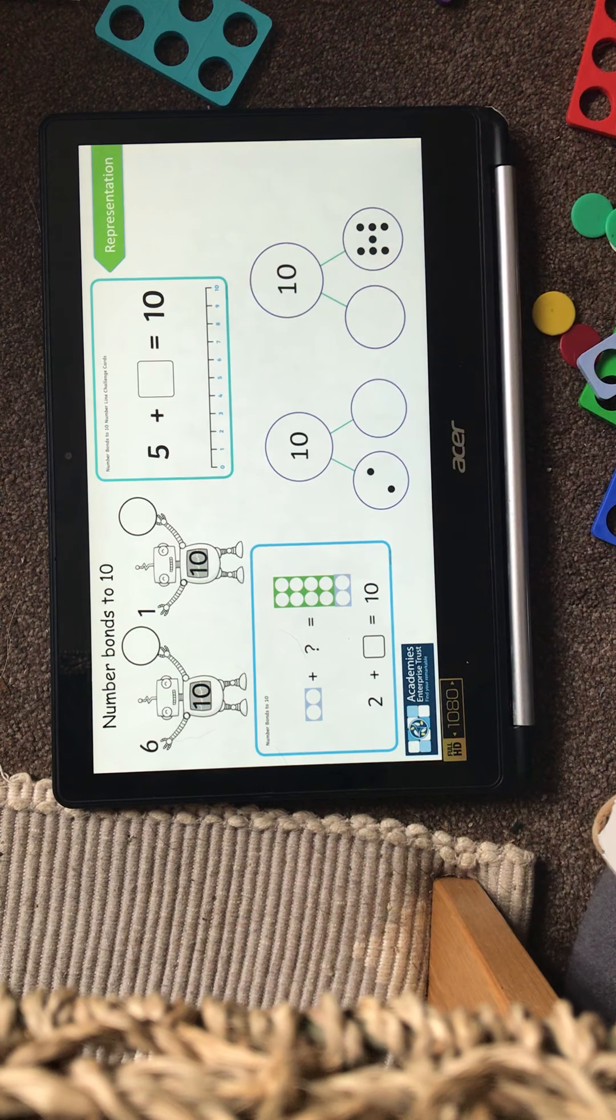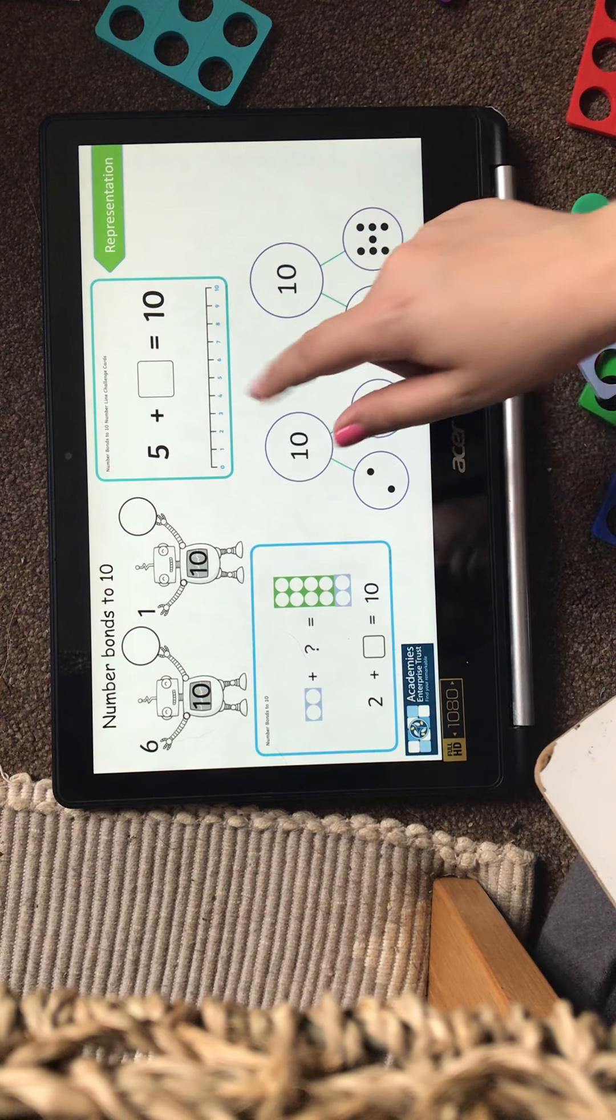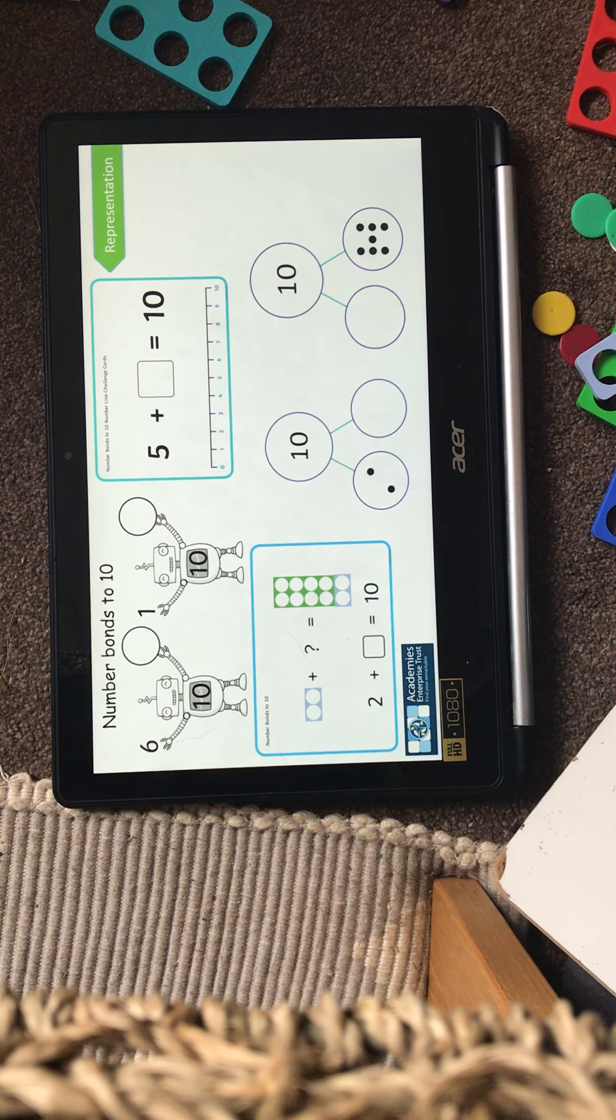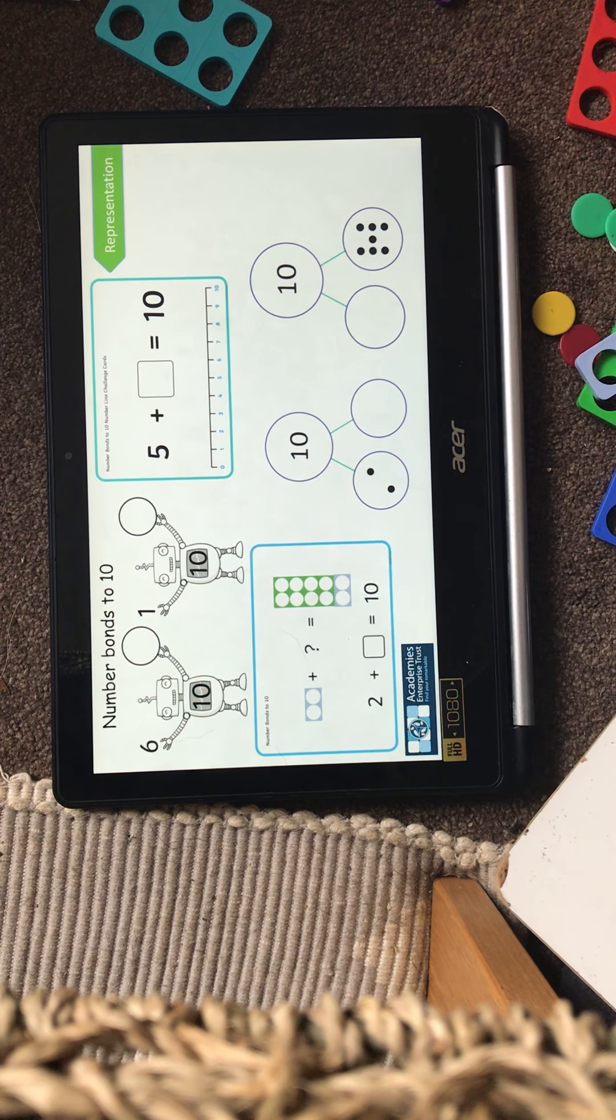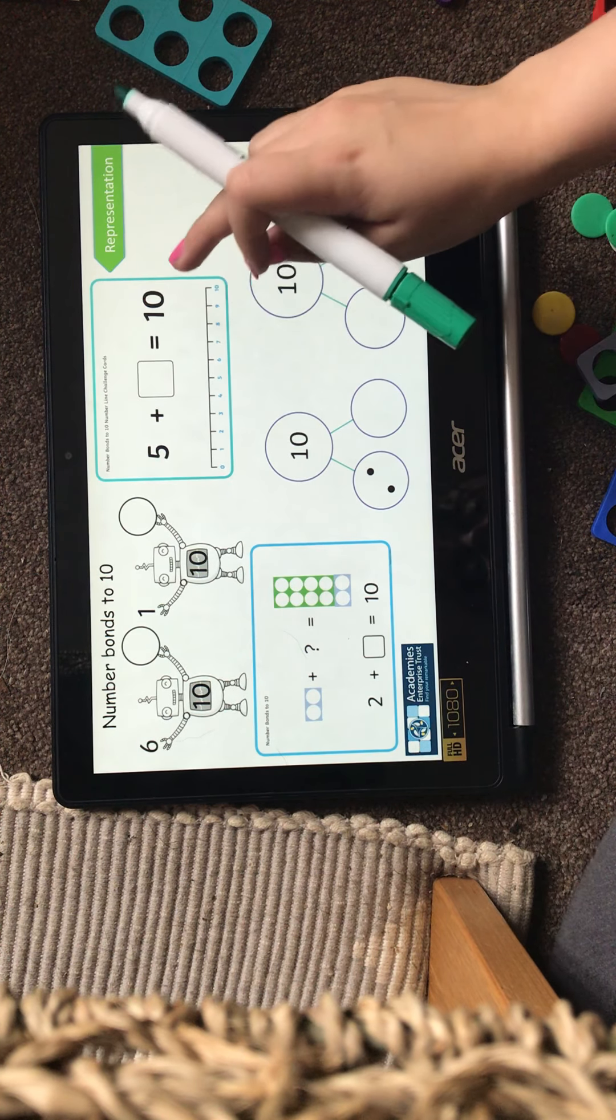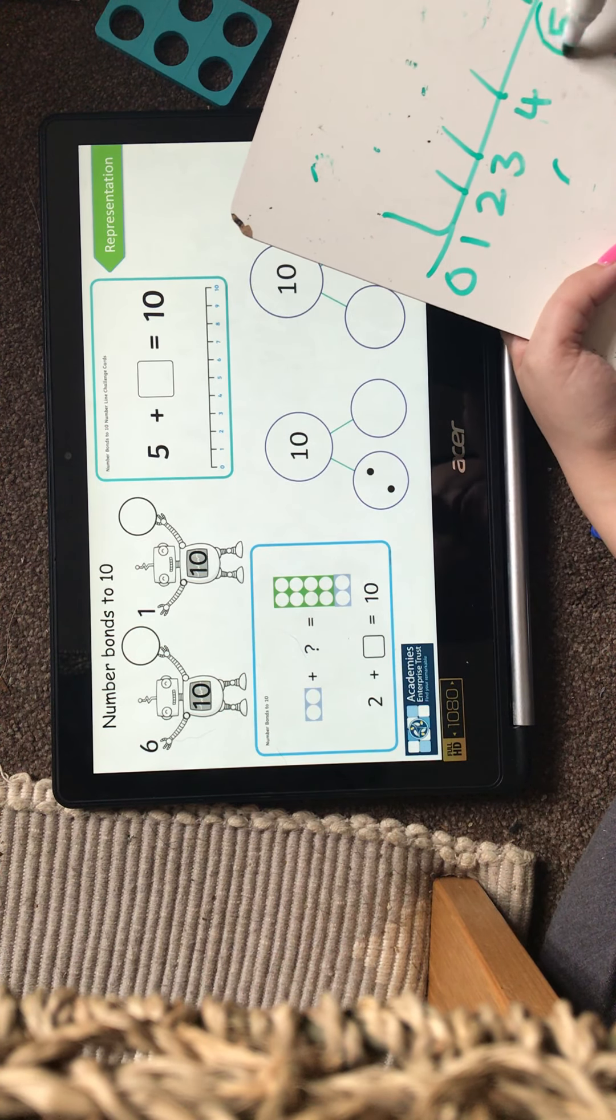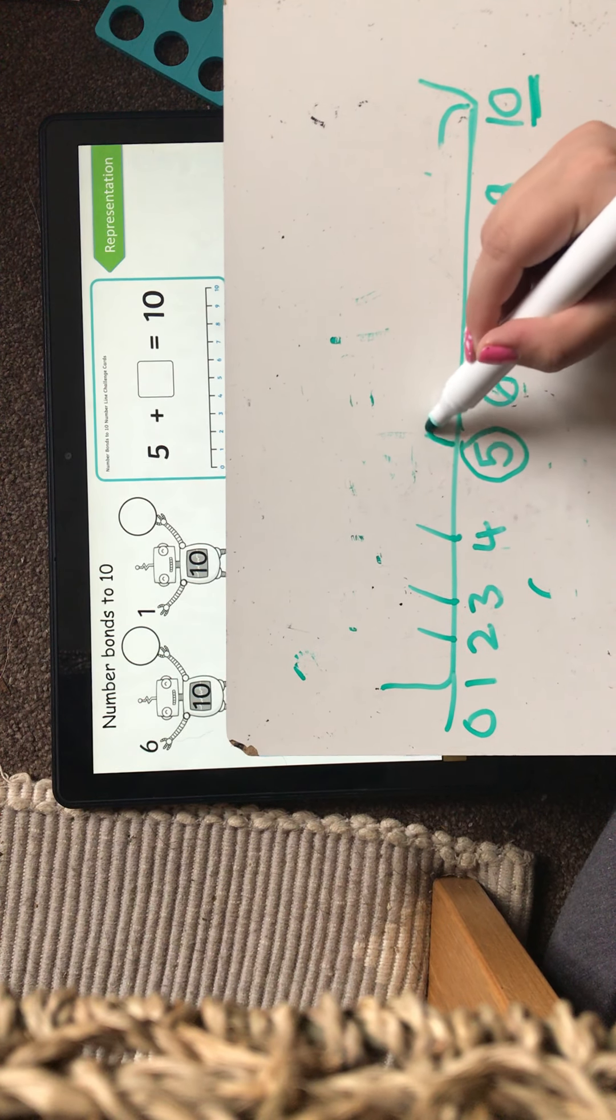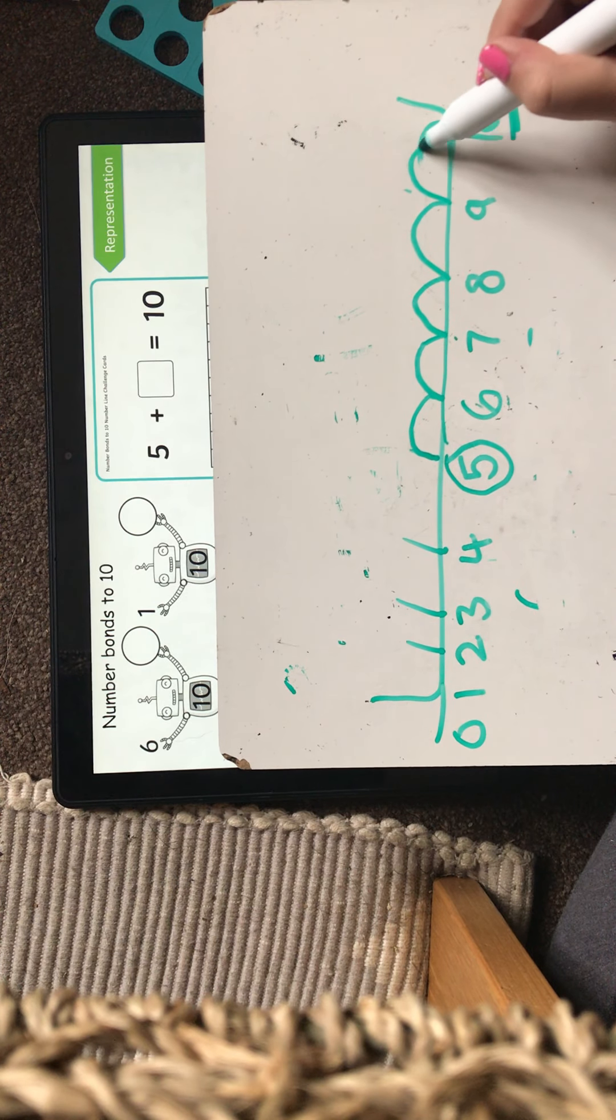Then I have questions like this. So this one I can use a number line. So I would start at 5. I could use the same number line. So I would start at 5. Now I need to reach 10. 10 is my total. So I'm going to start at 5 which is here, and see how many I need to jump on. So I'm going to do my bunny hops. 1, 2, 3, 4, 5.